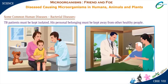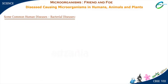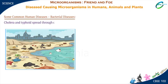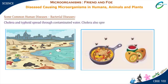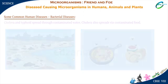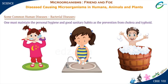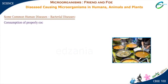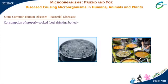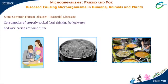Cholera and typhoid are also bacterial diseases. They spread through contaminated water, and cholera also spreads via contaminated food. One must maintain personal hygiene and good sanitary habits as prevention. Consumption of properly cooked food, drinking boiled water, and vaccination are some of the preventive measures against cholera and typhoid.